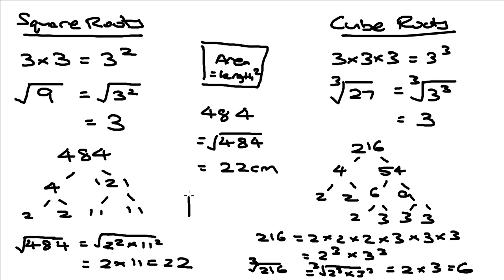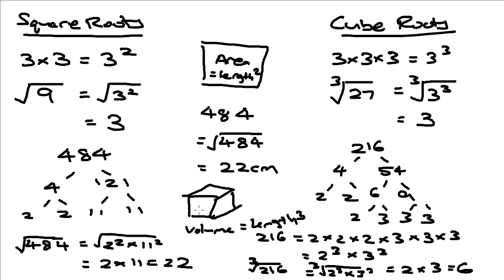When we look at the volume of a cube, volume is actually length cubed. So if you are given the volume of a cube, you can find the length by taking the cube root of the volume. So if the volume is 216, the length will be 6.